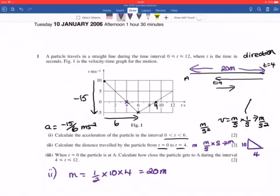When t equals 0, the particles are A, which is why I've called it A. Calculate how close the particle gets to A during the interval between 4 and 12. So if I look at it, I'm only going to go, actually, up to where the time is equal to 9, because then it changes direction again. So you need to think about it very carefully.